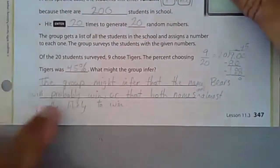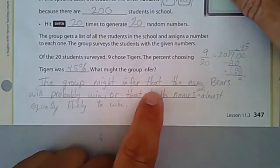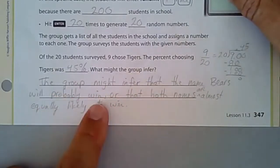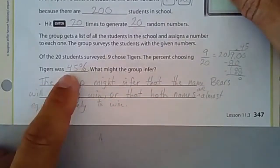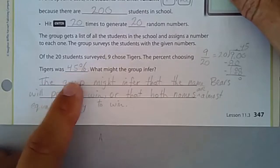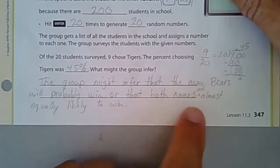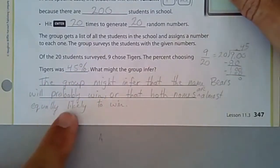What might the group infer? Given this information here, what could they deduce? The group might infer that the name Bears will probably win because Tigers lost, that was under 50%, or both names are almost equally likely to win because 45% is pretty close to 50%.